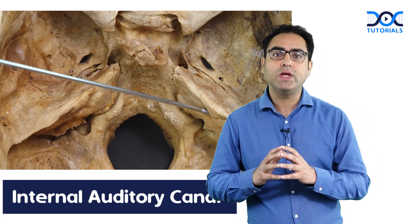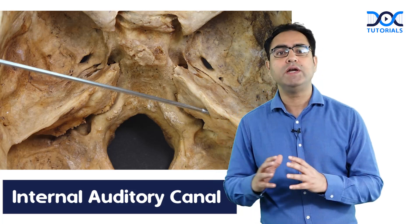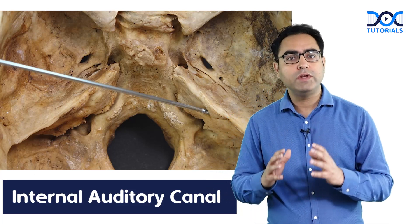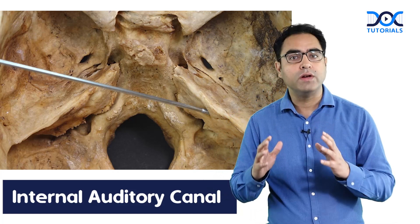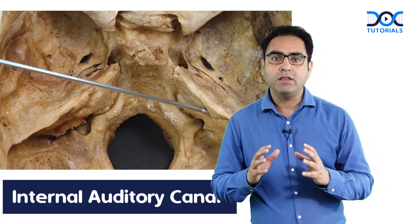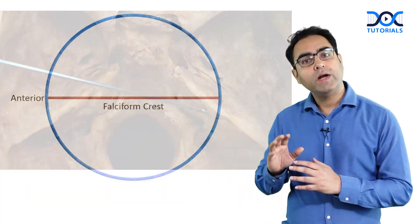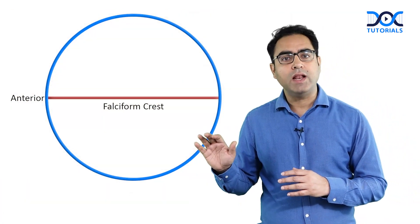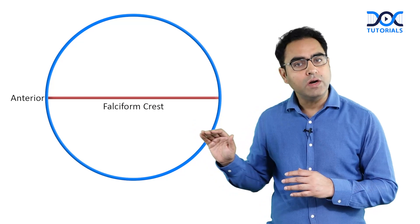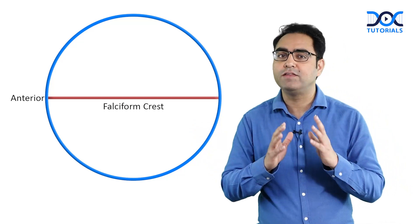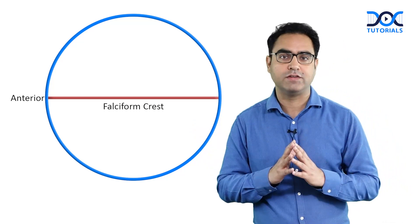Now, if we do the cut section of the internal auditory canal, you will be able to see 4 nerves there. The important thing is — look at this diagram — the internal auditory canal has got a horizontal bony septum, which is called the falciform crest.